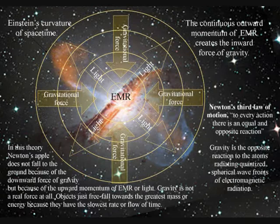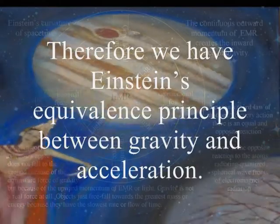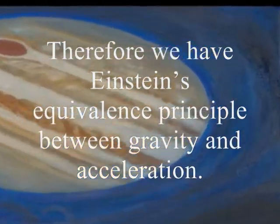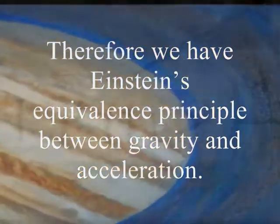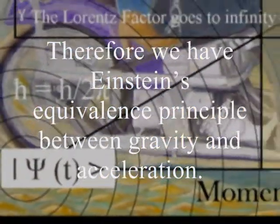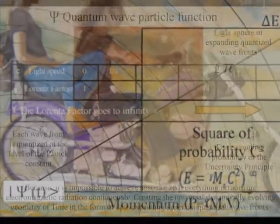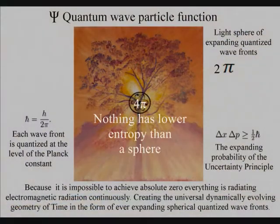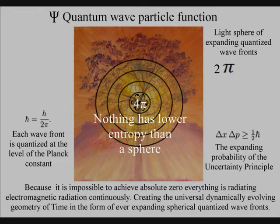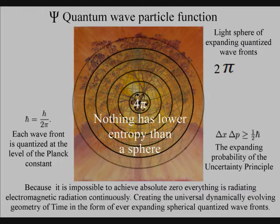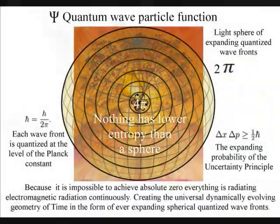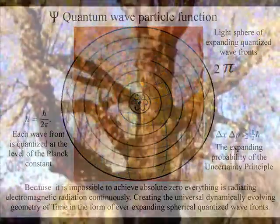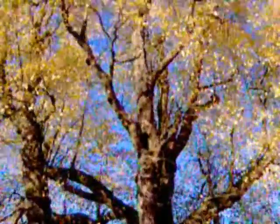In this theory, gravity is a secondary force to the electromagnetic force. Objects just freefall towards the greatest mass or energy, because it has the slowest rate that time flows. The second law of thermodynamics falls out of this theory. The organization for the spontaneous disorganization of entropy is formed by the spherical symmetry of the quantum wave particle function.